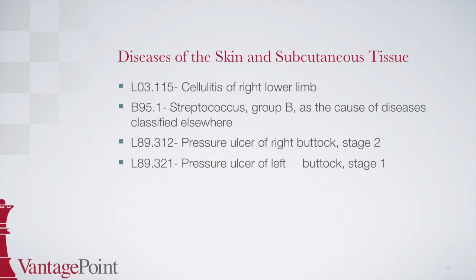The order for the codes in this scenario is important. Since the reason for the visit was to treat the cellulitis, the cellulitis is coded first, followed by the infection code for the condition that caused the cellulitis. Then the remainder of the codes should be sequenced from most to least severe. Therefore, the stage 2 ulcer would be sequenced before the stage 1 ulcer.